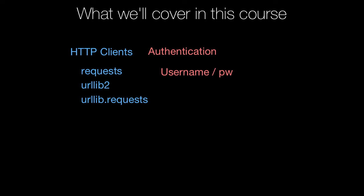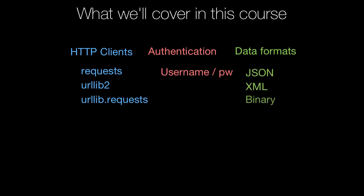So we're going to see how we can do username and password authentication to access restricted services. We're going to work with a variety of different data formats. When we talk to these HTTP services, they might want to send us data back in the form of JSON or XML or super complicated XML in the form of SOAP or even binary data.